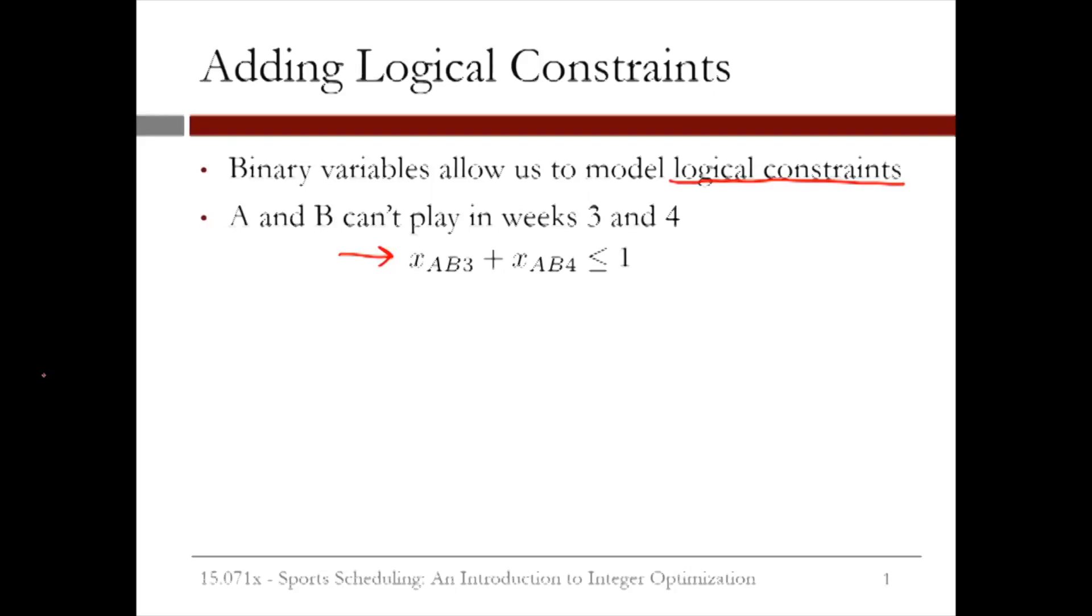Let's look at another example. Suppose we want to add the restriction that if A and B play in week 4, then they must also play in week 2. We can do this by adding the constraint xAB2 greater than or equal to xAB4.